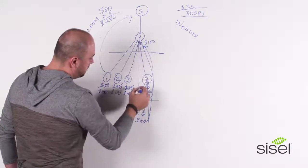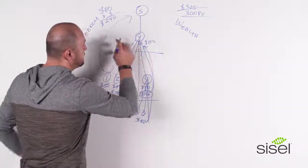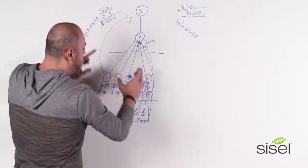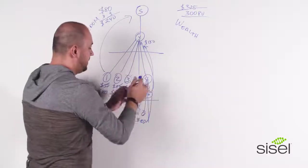So you're going to get $80 for number one, $80 for number two, and $80 for number three. Just like your sponsor did on this side, this is going to happen on this side.